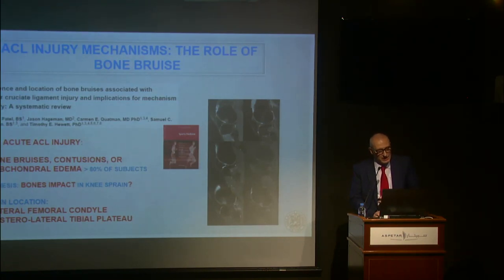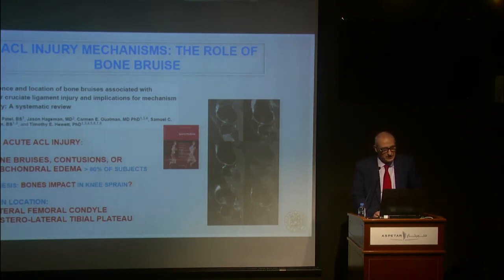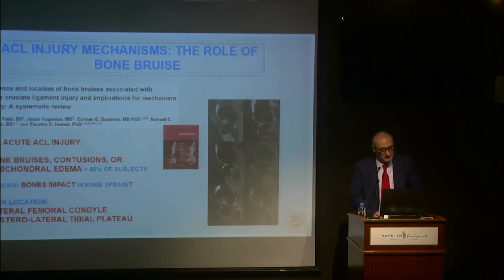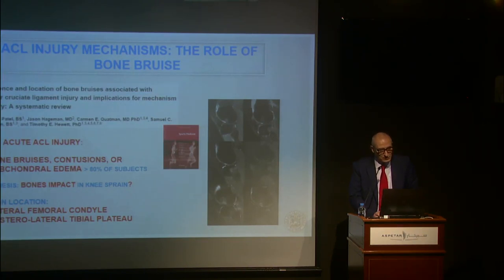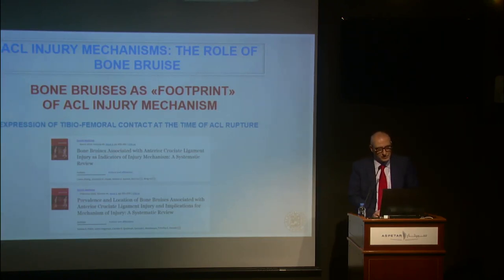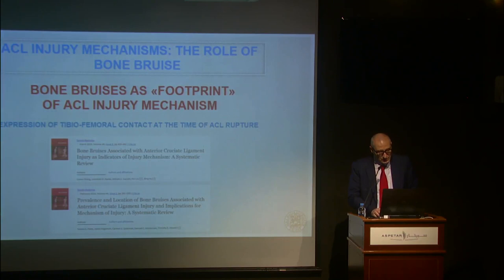In the MRI of acute ACL injury, you have bone bruise — a contusion and subchondral edema — present in about 80% of subjects. The genesis is bone impact during the knee sprain. It is mainly found on the lateral femoral condyle and posterolateral tibial plateau. We tried to find the bone bruise as the footprint of the ACL injury mechanism and the expression of tibio-femoral contact at the time of ACL rupture.